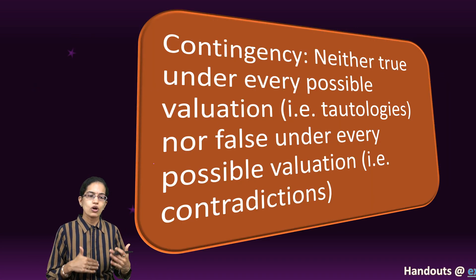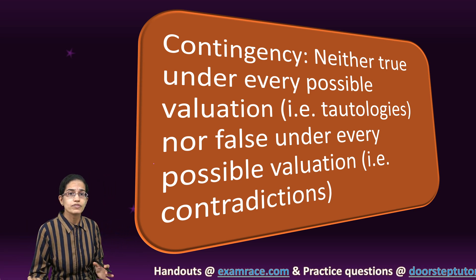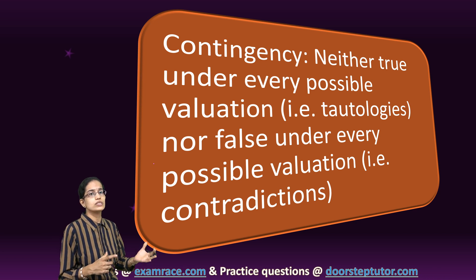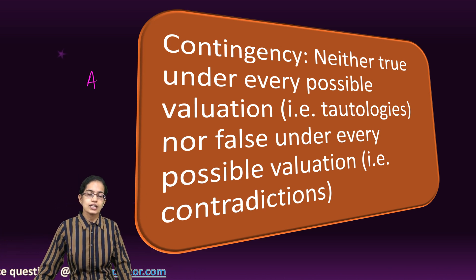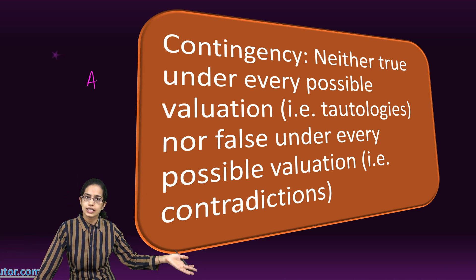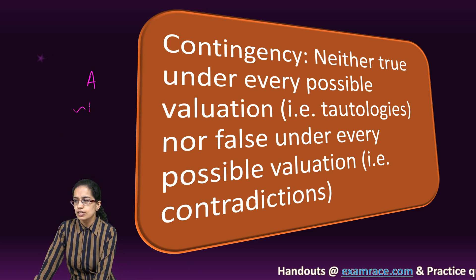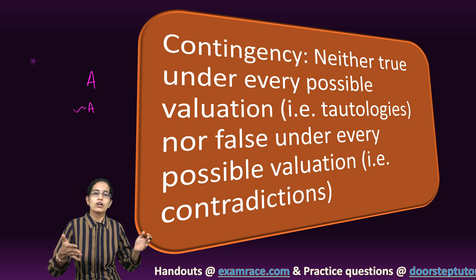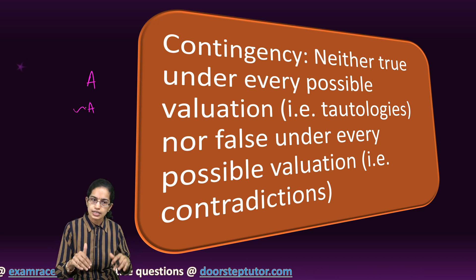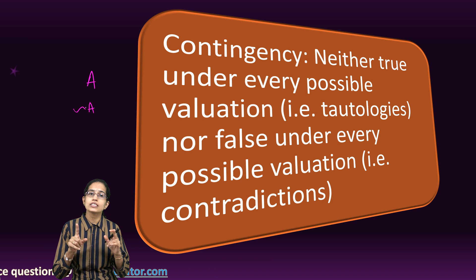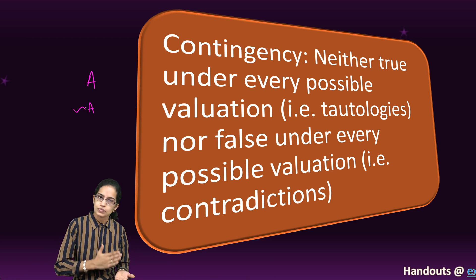Contingency is a form where a statement is neither always true nor always false — it is sometimes true, sometimes false. For example, 'It is raining' is a contingency: on some days it can rain, on other days it might not. Similarly, 'It is not raining' could be true today and false tomorrow. It is not always true or always false.